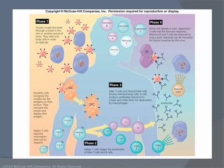Viruses invade the body through a break in your skin or other portal of entry, and they take over in order to replicate themselves. In the second phase, helper T cells trigger the production of killer T and B cells. In the third phase of disease, killer T cells and natural killer cells destroy infected body cells. They produce antibodies that bind to the viruses and mark them for destruction by macrophages — the big ones.